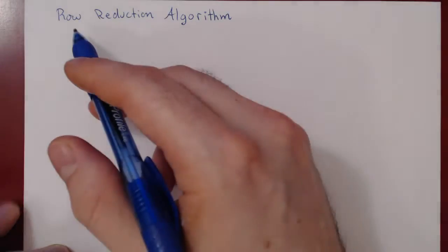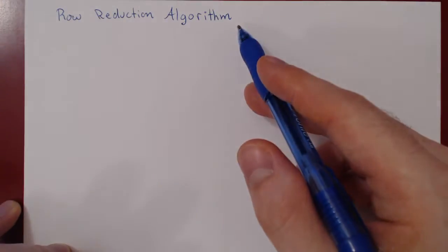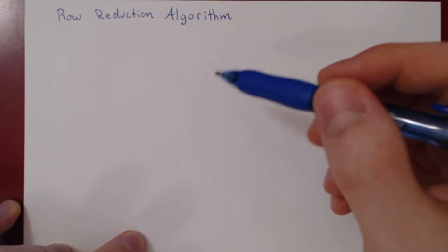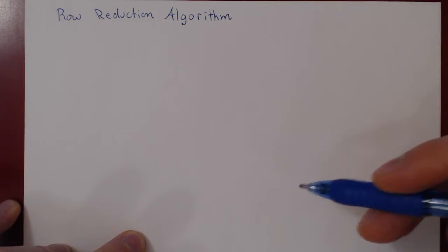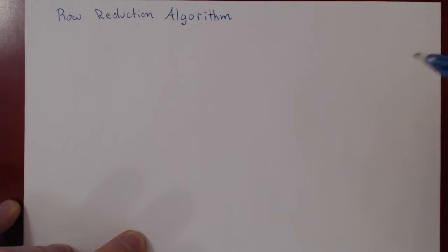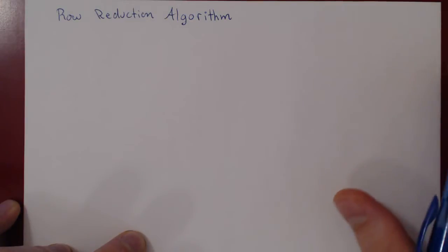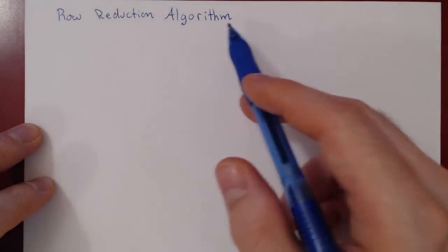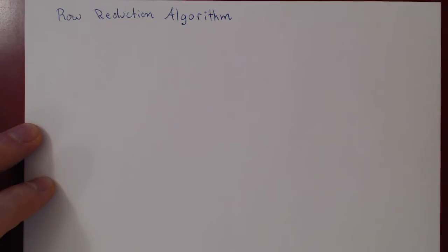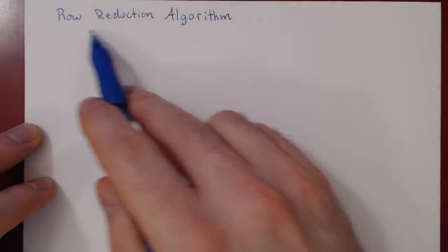In this video we will discuss the row reduction algorithm. An algorithm is simply a finite sequence of operations. We've seen the three types of row operations in our previous video. The question is how do we systematically apply these row operations to solve any linear system in the most effective way? Let's consider this algorithm conceptually first, and then I'll show you a simple example. As you go through the following videos, you'll see more and more complicated examples to reinforce your understanding.